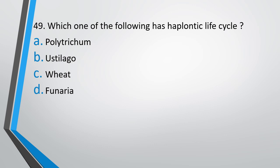Question number 49: Which one of the following has a haplontic life cycle? — Option A: Polytrichum, option B: Ustilago, option C: wheat, option D: Funaria. The correct answer is option B — Ustilago.